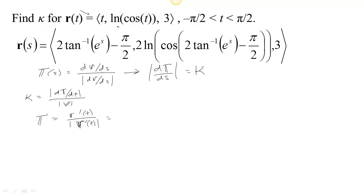Okay, so working with this, we take the derivative. The derivative of t is 1, the derivative of ln(cos t) is minus tan t, and the derivative of 3 is 0.